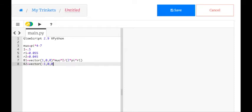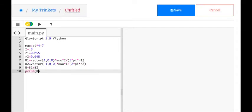And then I have times mu times i divided by 2 times pi times r2. And then B is going to be B1 plus B2. And let's print that.